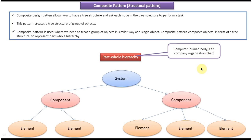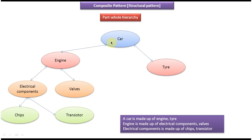Next we will see a car example. You can see a car is made up of engine and tires. The engine is made up of electrical components and valves, and the electrical components are made up of chips and transistors. This is a tree structure and a best example of part-whole hierarchy. If you want to create this kind of tree structure then we can use composite design pattern.